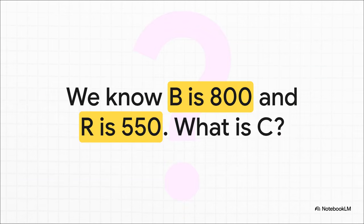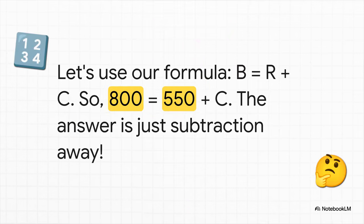Now here's a little challenge. We know the money base B is 800, and we just figured out that bank reserves R are 550. So using that formula we just learned, can you figure out the missing piece — how much cash is actually out there in people's pockets? Let's plug in the numbers. Our formula is B equals R plus C, so 800 equals 550 plus C. The answer is just a little bit of simple subtraction away: 250. The 550 in bank reserves plus 250 in public cash adds up perfectly to our 800 money base. The system is perfectly balanced — for now.